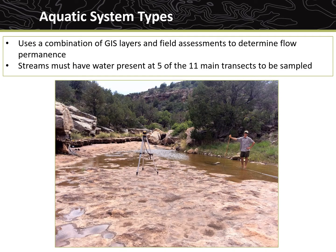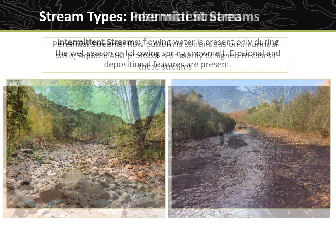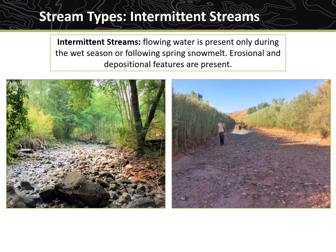The Lotic AIM protocol uses a combination of GIS layers and field assessments to determine flow permanence. In the field, streams must have water present at five of the 11 main transects to be sampled. The Lotic AIM protocol is primarily designed to assess the condition of perennial streams. Perennial streams have a flow or discharge pattern that is continuous on an annual basis, while intermittent and ephemeral streams do not flow as often and therefore can have different physical characteristics and ecological potential. Intermittent streams have flowing water during the wet season or following spring snowmelt, and these stream channels may not be as well defined as those observed for perennial systems, but erosional and depositional features must be present.